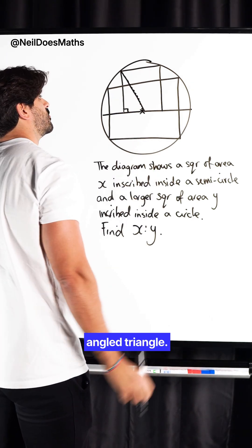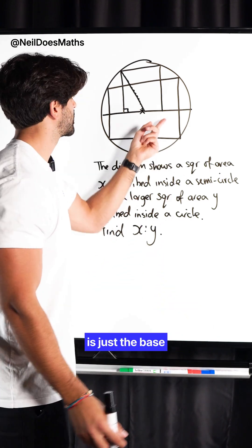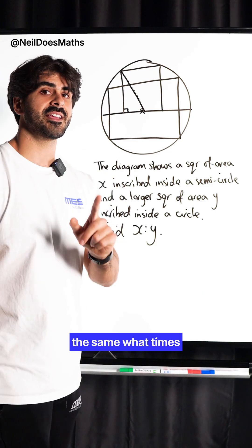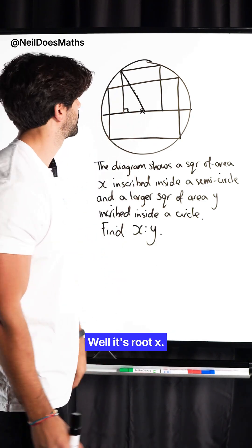Now, form a right-angled triangle. So, they said that the area of this square is X. The area of a square is just the base times the height. But because they're the same, what times what gives you X? Well, it's root X.